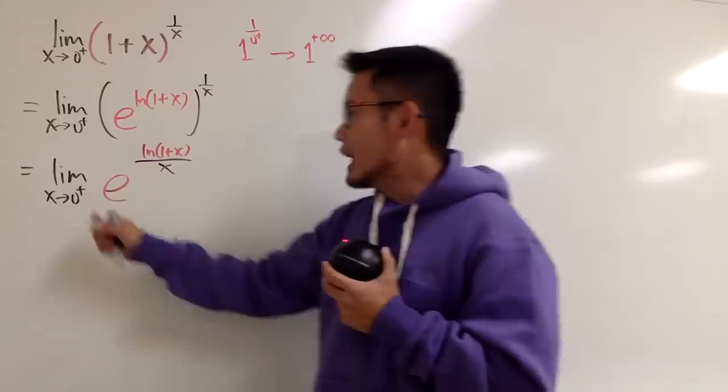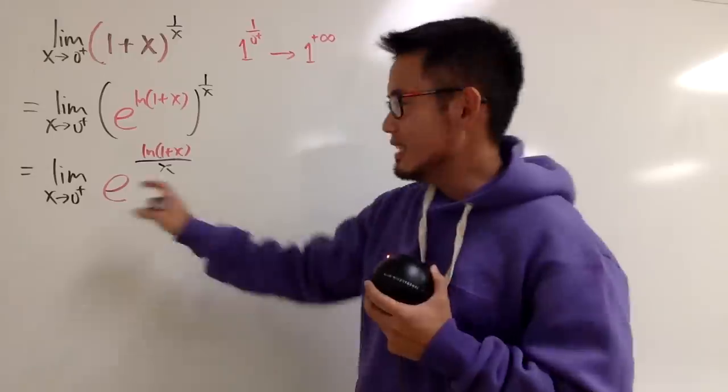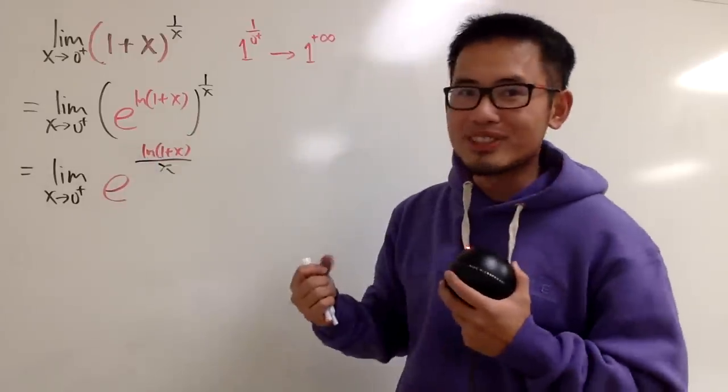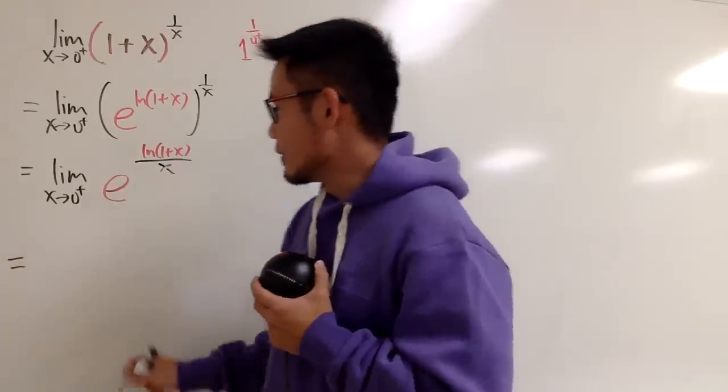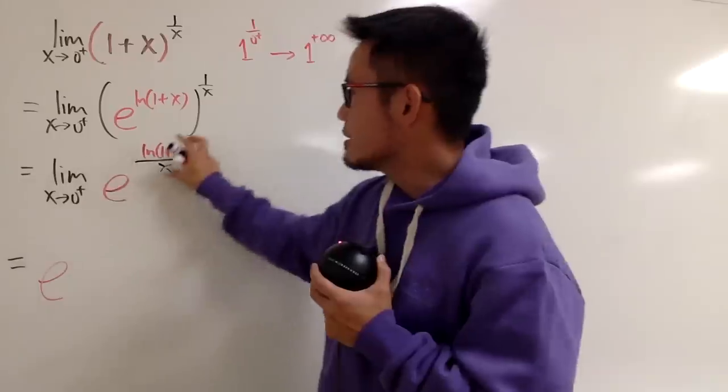And now, the deal is, when we have the limit of e to the something, it's the same as e to the limit of that, because e to the something is a continuous function. So I can write this down as the following.